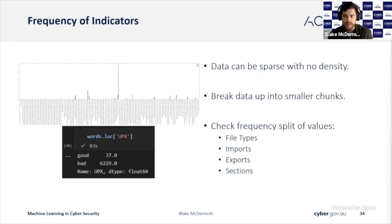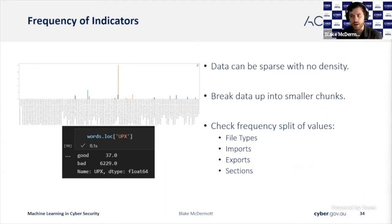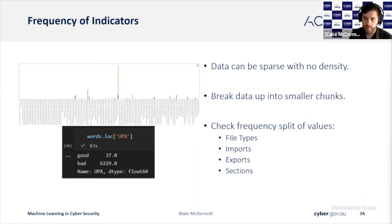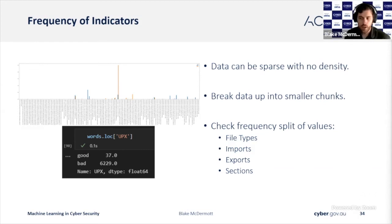Sometimes the data we need needs to be pulled apart so we can check it for frequencies of each part. When we look at the functions that are getting imported, sometimes specific combinations are often used by malicious files — and again, they may not inherently be malicious, but they may raise suspiciousness. With file types, for example, UPX is a common compression library — it is most commonly seen with malicious files, though there is a legitimate use for UPX as well.